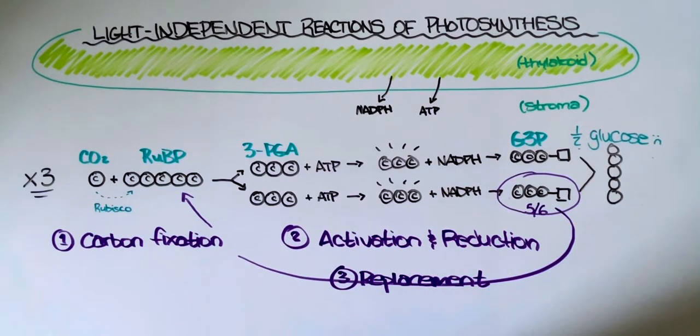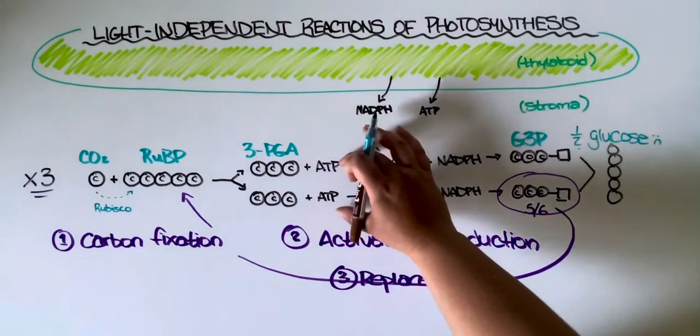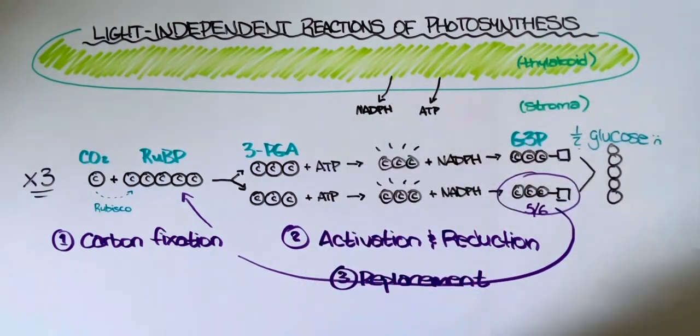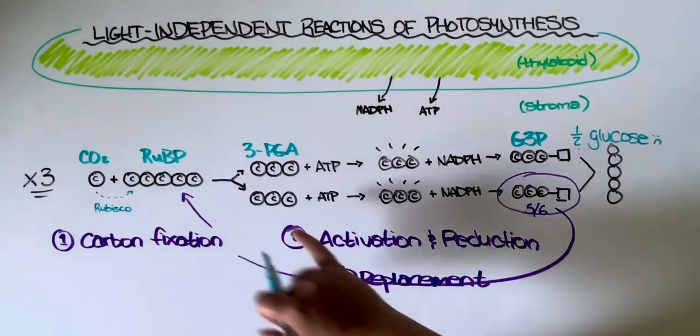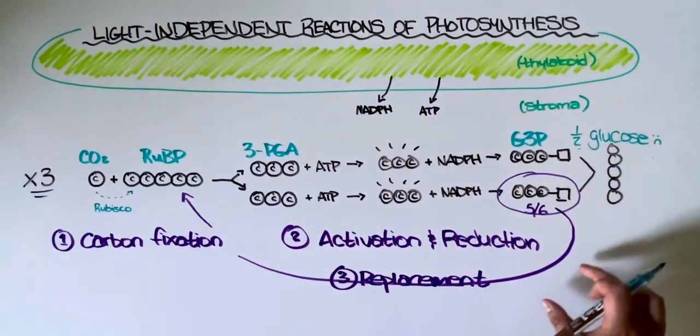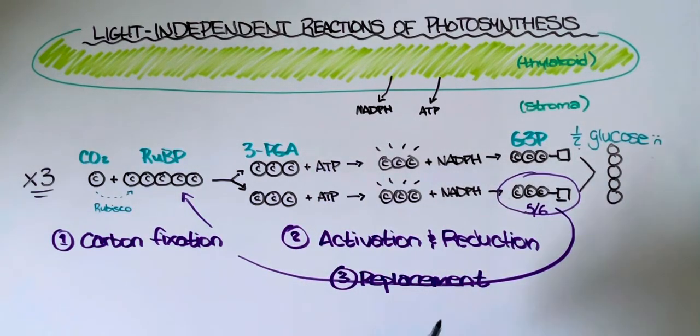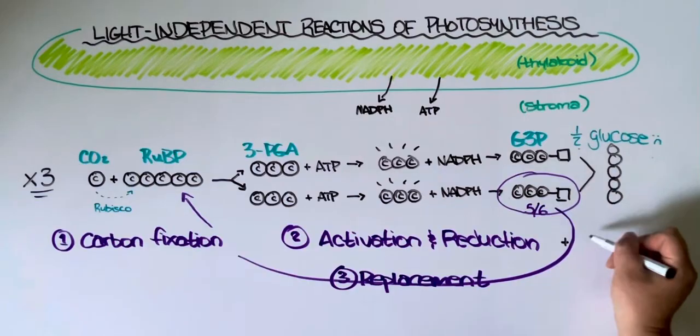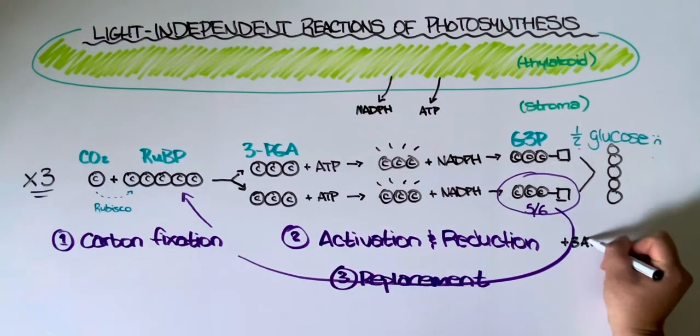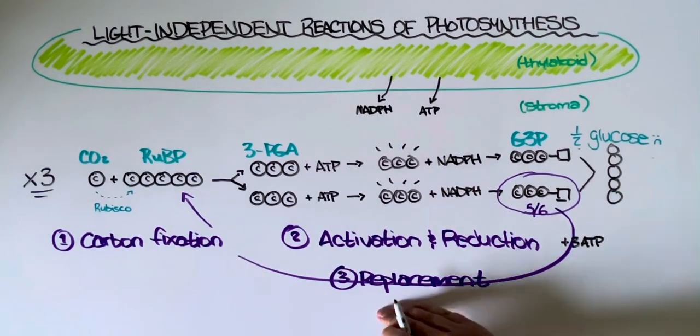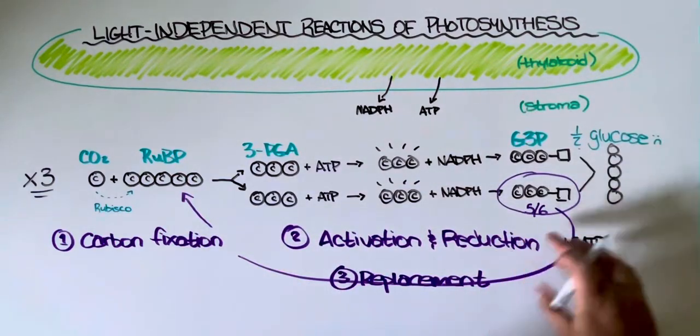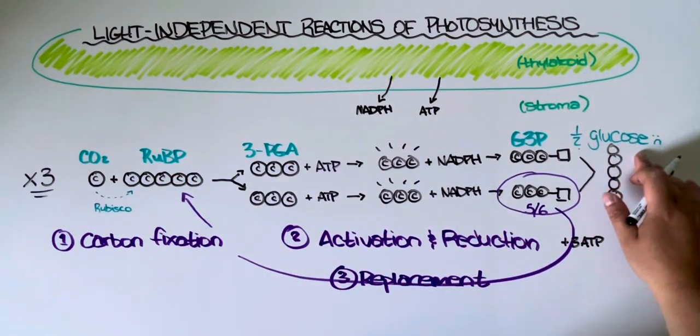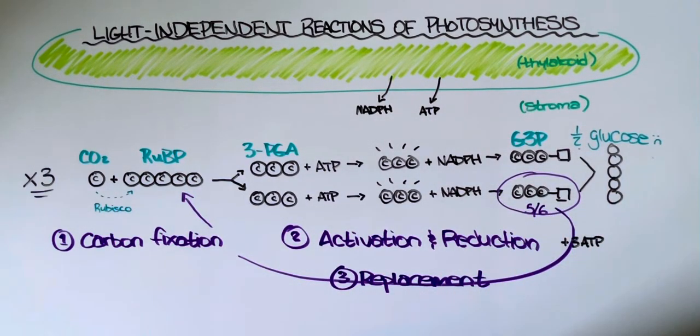We should also keep in mind that this is an energetically demanding process. Remember there are six ATPs required to make this second step happen, and there's actually an additional three ATPs required for the replacement step. So for one of these cycles, for just half of a glucose, there are nine ATP molecules required.